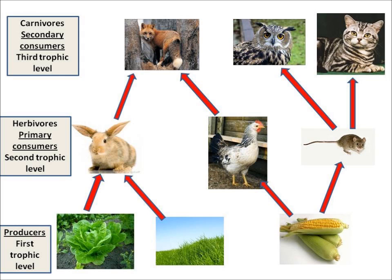This is all about interdependence and food webs. The diagram in front of you is a food web — it shows which organism eats which organism. I can see an individual food chain within my food web: the fox eats the hen and the hen eats the corn.